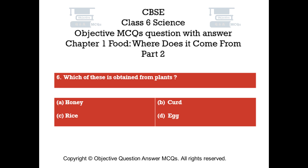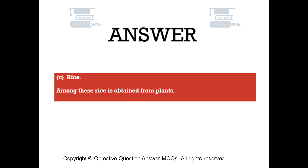Question number 6. Which of these is obtained from plants? Option A: Honey. Option B: Curd. Option C: Rice. Option D: Egg. The right answer is Option C. Among these, rice is obtained from plants.